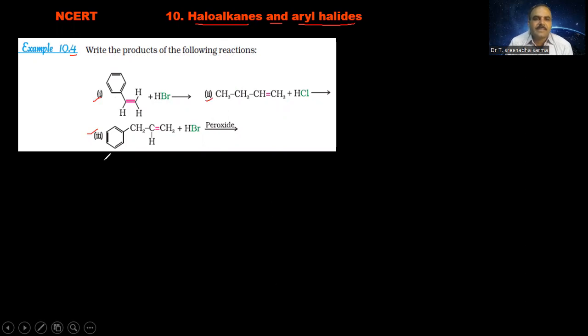The first one: C6H5-CH=CH2, this one is reacted with HBr. What is the product formed?